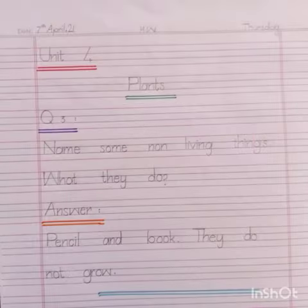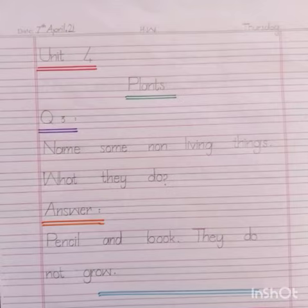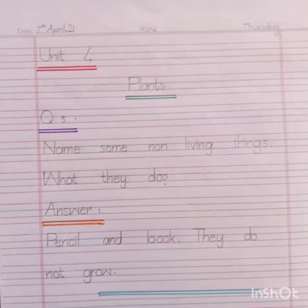Name some non-living things. What do they do? بے جان چیزوں کے نام لکھیں اور وہ کیا کرتی ہیں؟ Answer is Pencil and Book. یعنی کہ Pencil اور کتاب جو ہے وہ جاندار چیزیں نہیں ہیں، بے جان چیزیں ہیں. They do not grow. وہ بڑھتی نہیں ہیں.